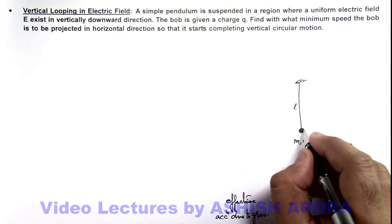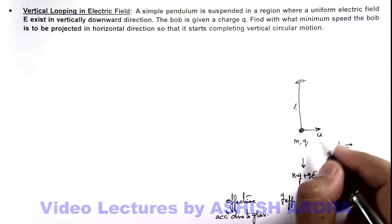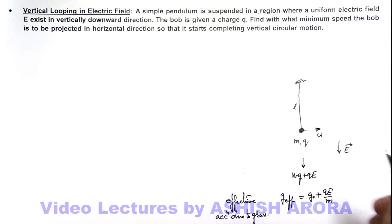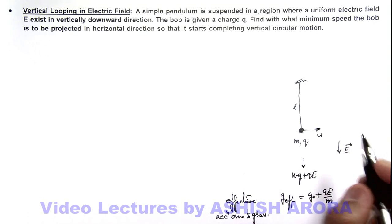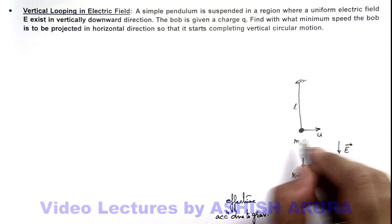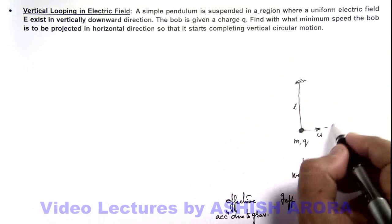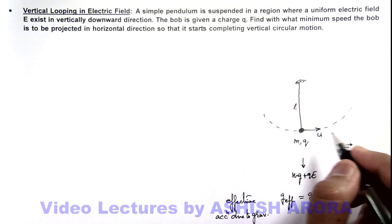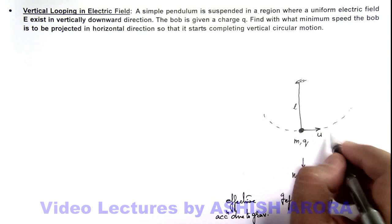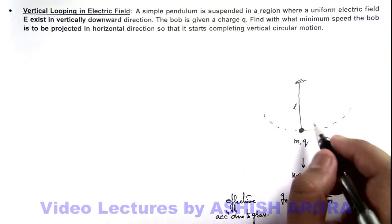So if we throw it in horizontal direction with speed u, then in this situation we can directly state the value of u such that it'll complete the vertical circular motion. And for completing vertical circular motion we know the minimum speed at the equilibrium position is root 5 g l.